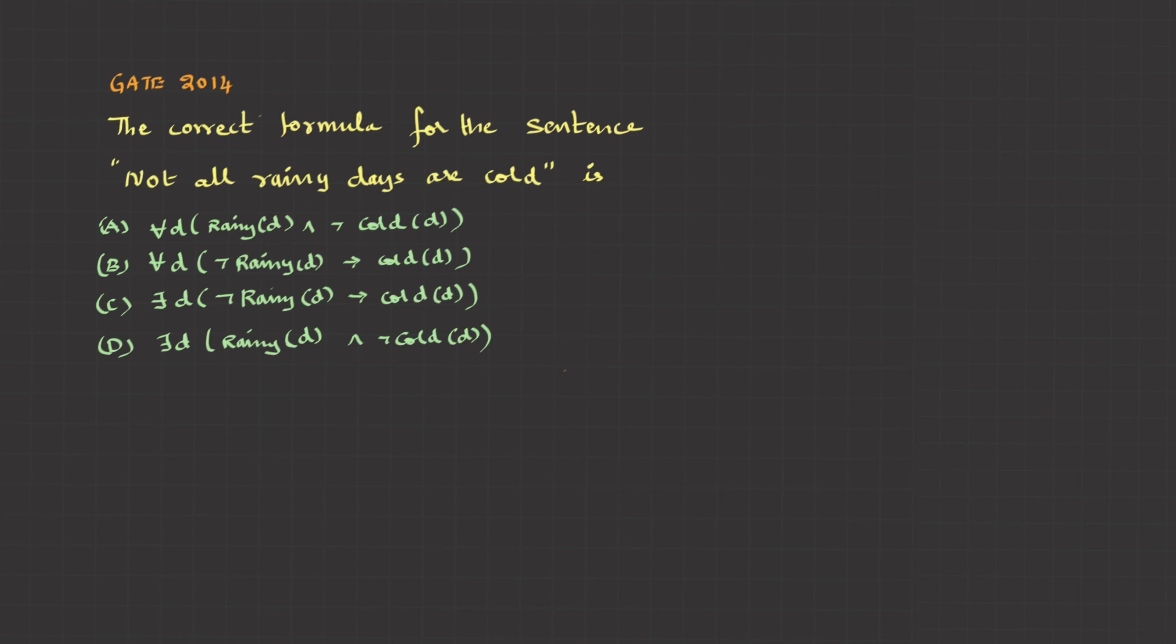Here is a question asked in GATE 2014. The correct formula for the sentence 'Not all rainy days are cold.' We can write the sentence as negate for all rain implies cold. And when we simplify it, it becomes this. That's option D.